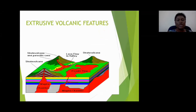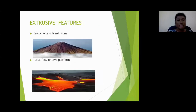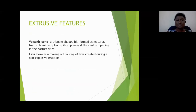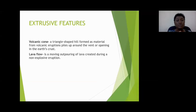Our extrusive volcanic features — the ones we see above the surface. This diagram shows you the volcano itself, the volcanic cone, as well as lava flows. The volcanic cone has a triangular shape and is a hill or mountain formed as material from volcanic eruptions piles up around the vent. The lava flow is simply the outpouring of lava — liquid rock created during a non-explosive eruption.